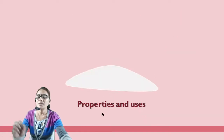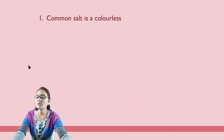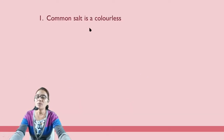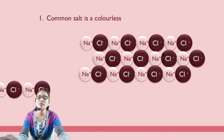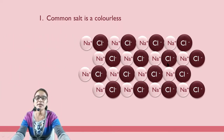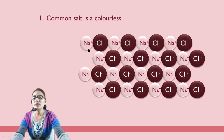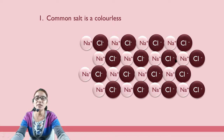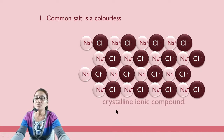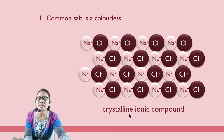Now what are the properties of table salt? The first property is that common salt is colorless. Look at this structure and arrangement. The molecular formula is NaCl, where Na⁺ is positive and Cl⁻ is negative. Due to this arrangement, NaCl is a crystalline ionic compound.